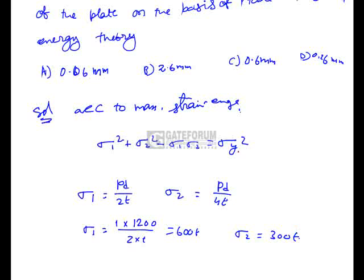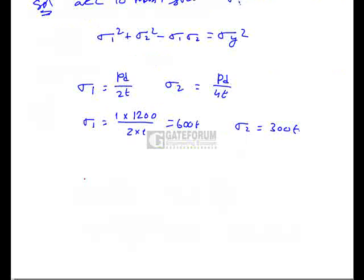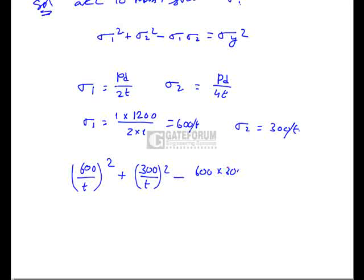Now substitute all the values. It is σ = 600/T and 300/T. Substitute: (600/T)² + (300/T)² - 600 × 300/T² = 200². From this equation we get T equal to 2.6 mm. So in the option, the right answer is B, B is the right answer.